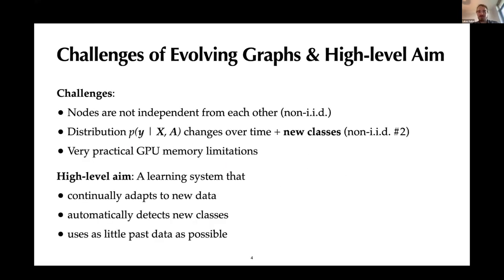So what are the specific challenges of evolving graphs? And what are the high level goals that we pursue here? First of all, the nodes are actually not independent from each other, because they are by definition connected to each other through edges in the graph. And moreover, the distribution of the class given node features and the graph adjacency A changes over time. Plus, we have even new classes coming. So in two ways, it violates all of the IID assumption. It's not identically distributed, and it's not independent from each other.